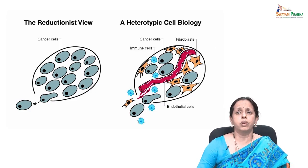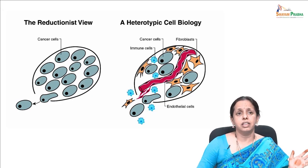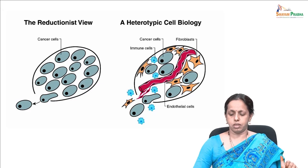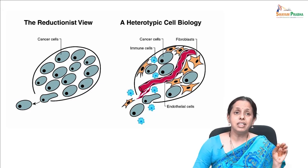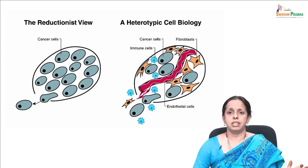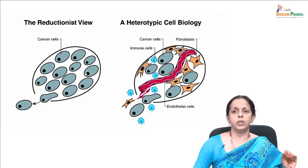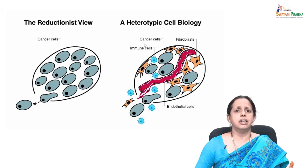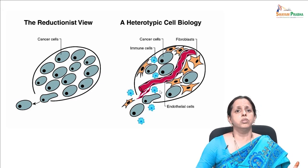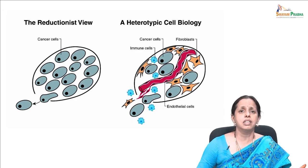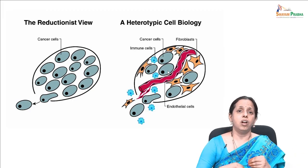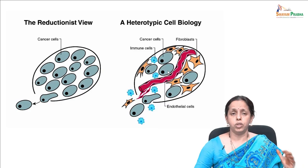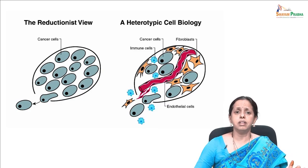Normal cells evolve progressively to a neoplastic state and acquire hallmark characteristics. This multi-step process of human tumor pathogenesis can be rationalized by the need for incipient cancer cells to acquire these driver traits. We now see cancer cells along with host immune cells, fibroblasts, and other epithelial cells all having wonderful interactions — paracrine and autocrine — where each facilitates the growth of the other to form a tumor microenvironment.